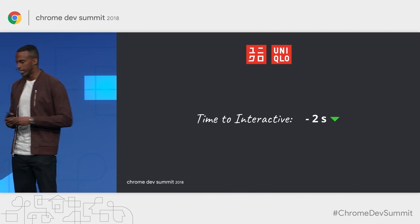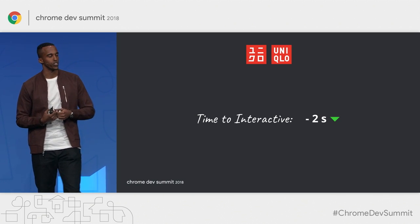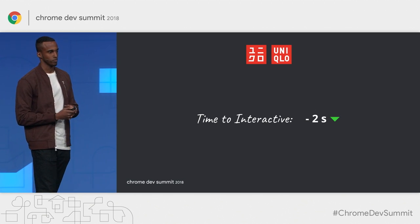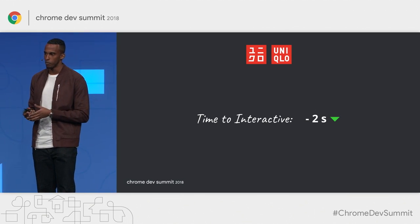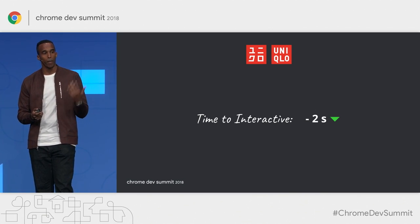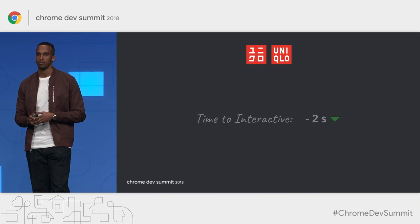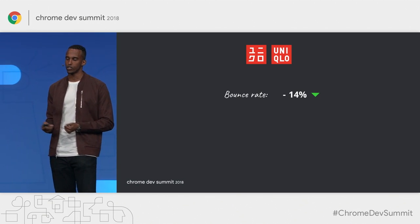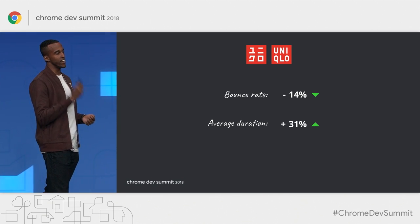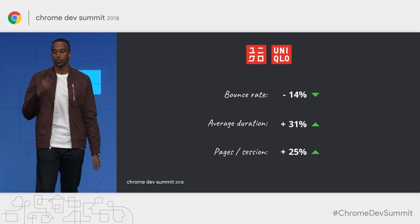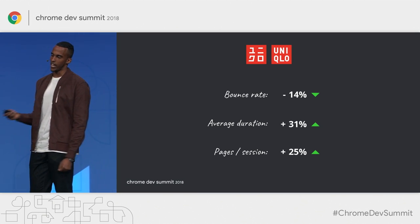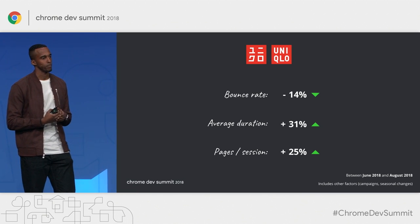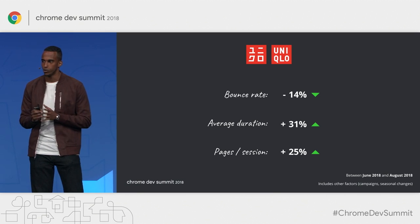While adding these optimizations, Uniqlo noticed a two-second time-to-interactive reduction for users on low-end mobile devices with weaker connections. You might think two seconds is not that much, but it can make an impact. After these optimizations were added, they noticed a 14% reduction in bounce rate, a 31% increase in average duration, and a 25% increase in pages viewed per session. There were other things also being added to the site at the same time, but they know that performance played a very large factor.